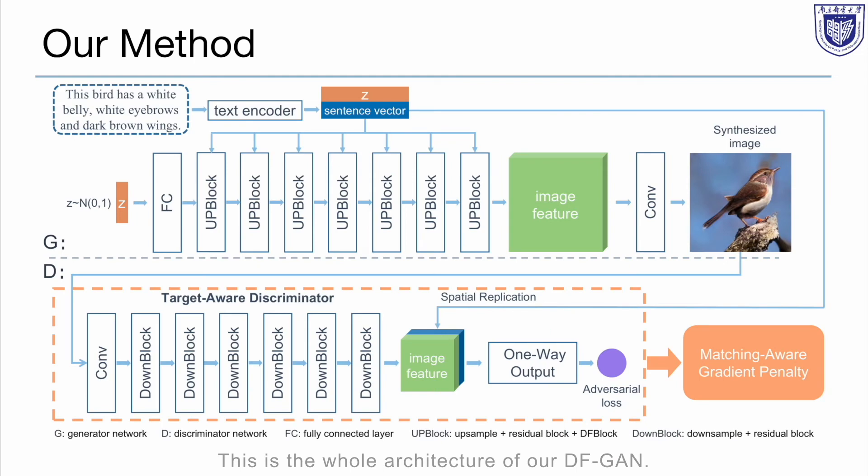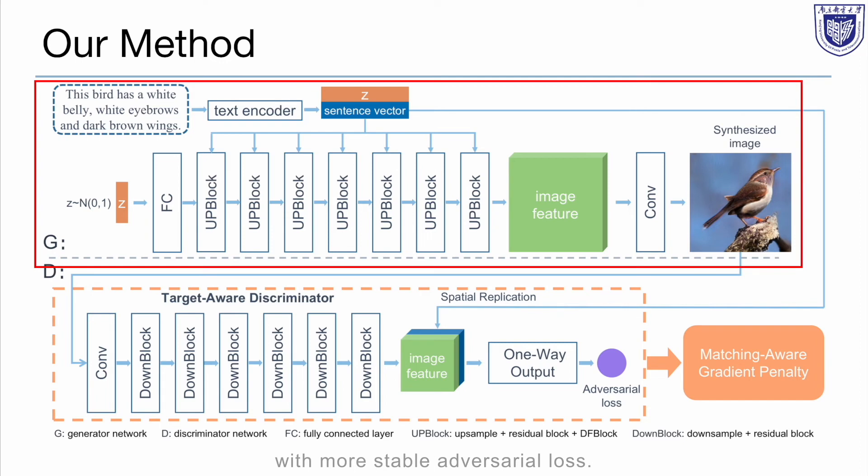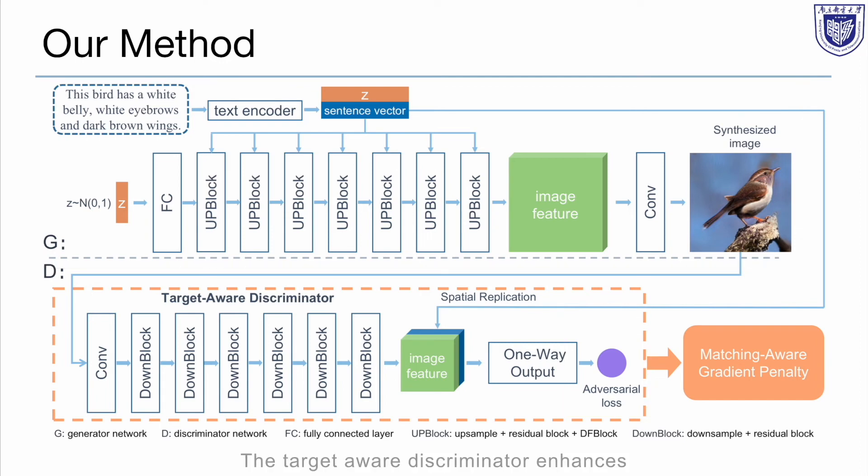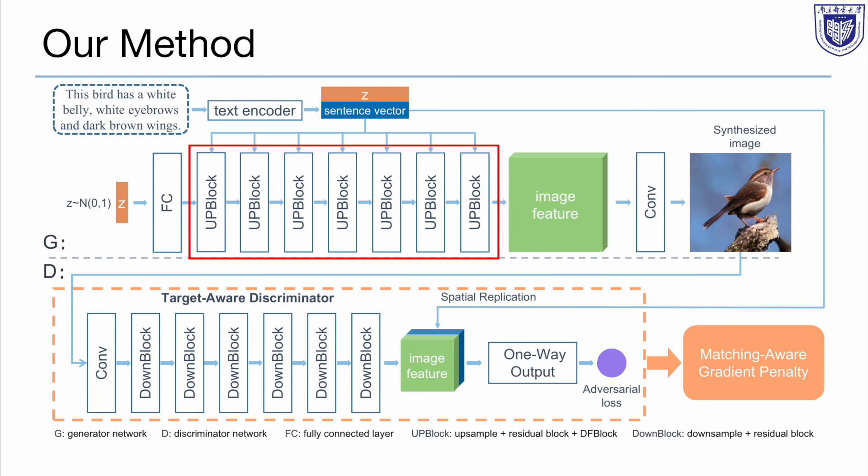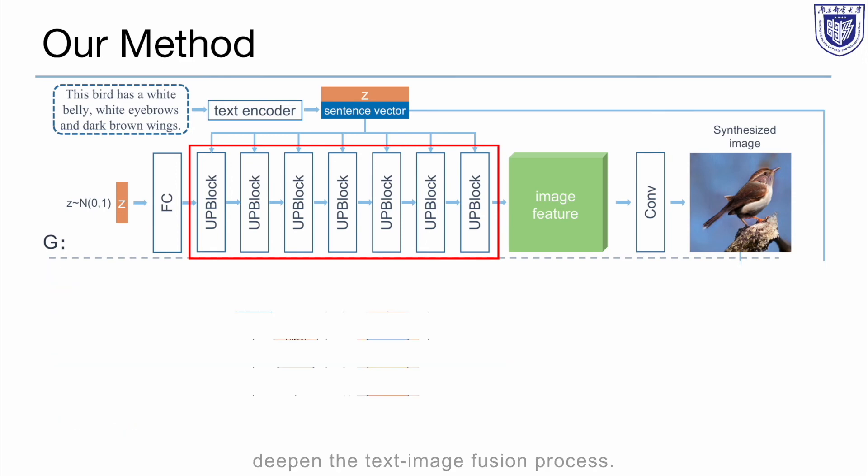This is the whole architecture of our DF-GAN. It can synthesize high-resolution images directly with more stable adversarial loss. The target-aware discriminator enhances the text-image semantic consistency through matching-aware gradient penalty and one-way discriminator. And the DF blocks in each UP block deepen the text-image fusion process.